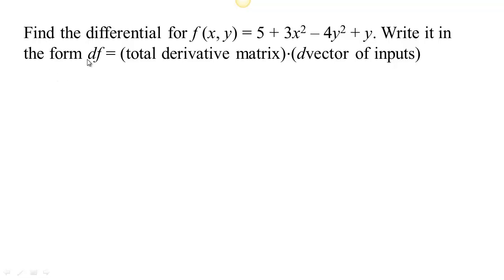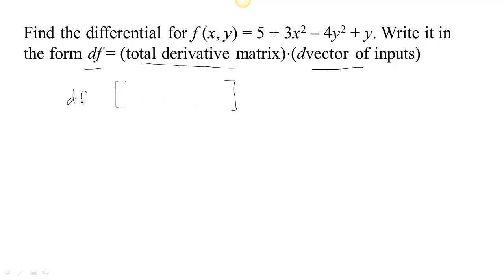If we want to find the change in the output, the change in the output is always going to be a matrix of derivatives — a matrix of slopes or rates of change — times a vector of changes in input. For example, this function has one output, so the matrix is going to have one row, and there are two inputs, x and y, so the matrix will have two columns. In those columns, we put the partial derivatives.